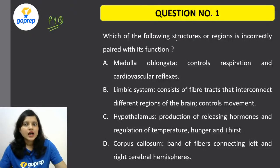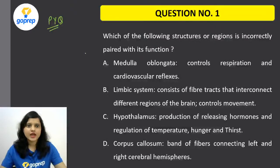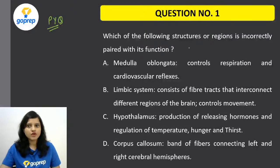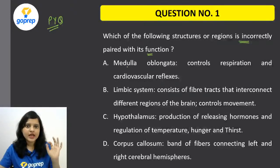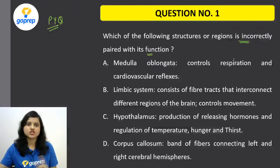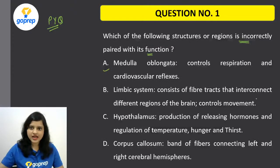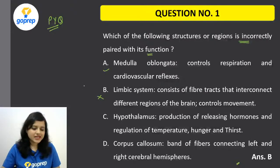So let's start. All the questions we are going to discuss today are previous year questions. Don't panic — with a calm mind, let's look at the questions and mark the correct answers. Which of the following structures or regions is incorrectly paired with its function? All these are parts of the brain. Medulla oblongata controls respiration and cardiovascular reflexes. Limbic system consists of fiber tracts that interconnect different regions of the brain and control movement — this statement is wrong. The correct answer is B.